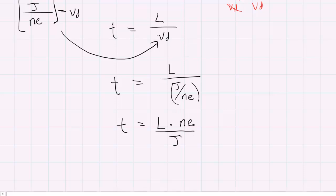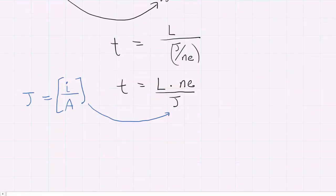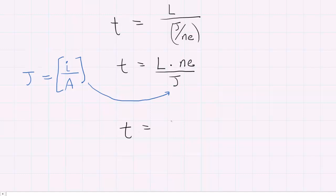We still need an expression for the current density J. Current density in its most basic form is the amount of current divided by a cross-sectional area. We'll plug current over area in for J. So time equals Lne over current over area. Doing keep, change, flip one more time gives us Lne times area over current.